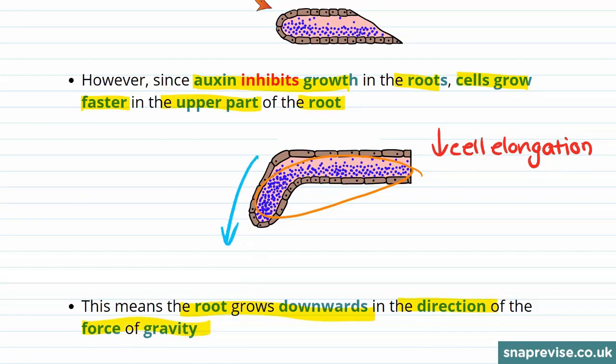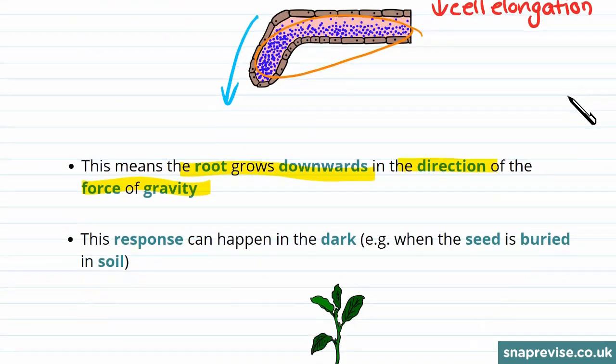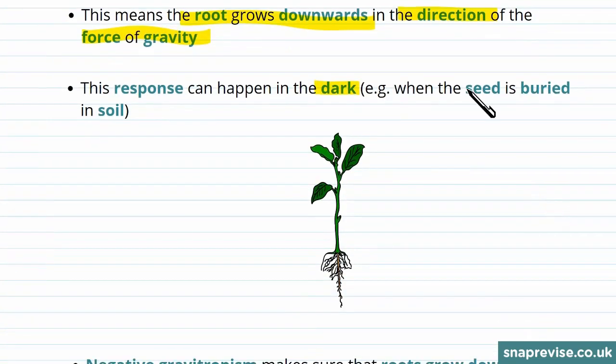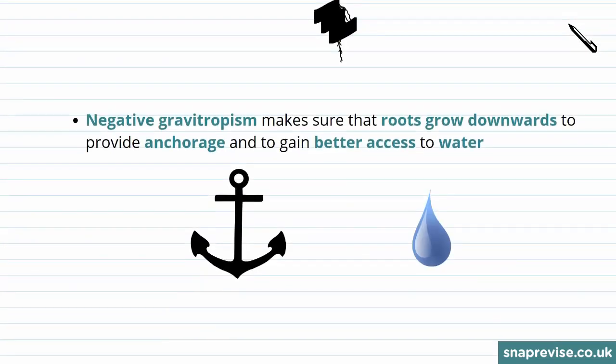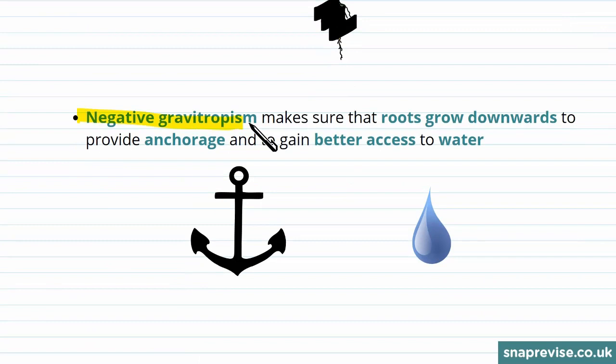One interesting fact about gravitropism is that it can happen in the dark, for example when the seed is buried in soil. Positive gravitropism is really useful as it makes sure roots grow downwards to provide anchorage and better access to water. This helps keep the plant structure stable and allows it to get water needed for photosynthesis.